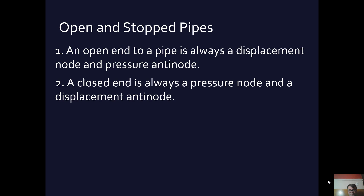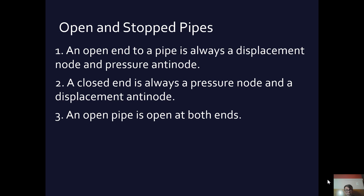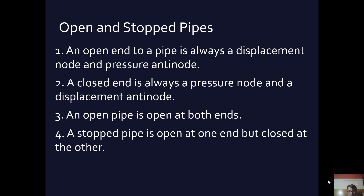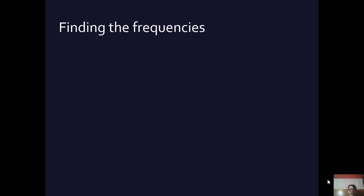For a stopped pipe, the closed end is the opposite. A closed end has zero pressure because it's not facing the world, and therefore the displacement at the closed end is an antinode. To recap: an open pipe is open at both ends; a stopped pipe is open at one end and closed at the other. Okay, those are our ground rules.